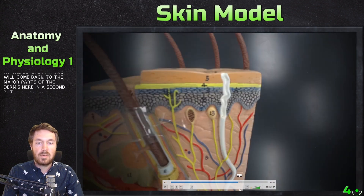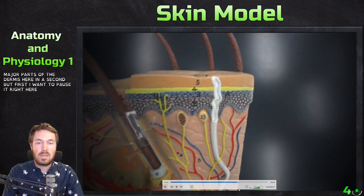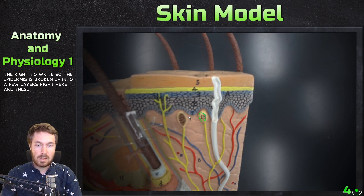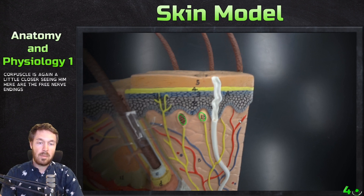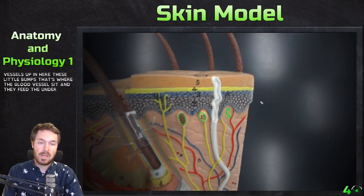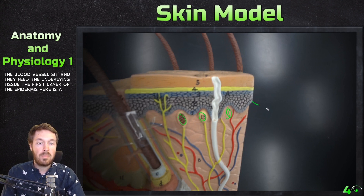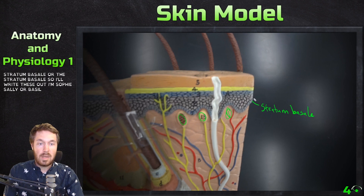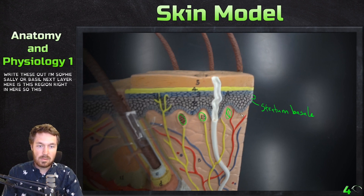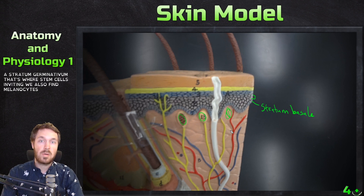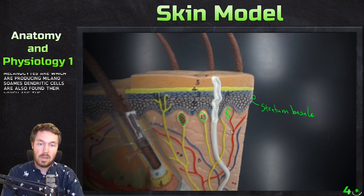Now looking at the epidermis more closely — we can see the tactile corpuscles and free nerve endings. Blood vessels sit within the dermal papillae bumps and feed the underlying tissue. The first layer of the epidermis is the stratum basale, also known as the stratum germinativum. This is where stem cells are dividing, and we also find melanocytes producing melanosomes, and dendritic cells which are immune responders.